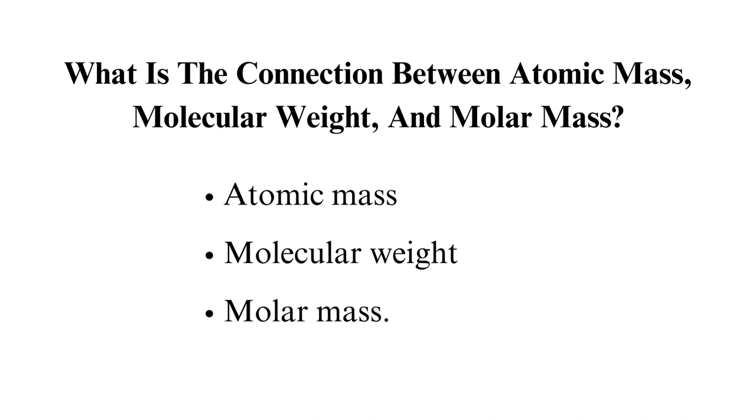You can know the atomic mass of any element by simply using the periodic table. When you look at the periodic table, there are two numbers for each element. One number is the atomic number, and the other number is atomic mass. The smaller number is the atomic number, and the bigger one is the atomic mass. Let's look at the image below to understand the difference better.